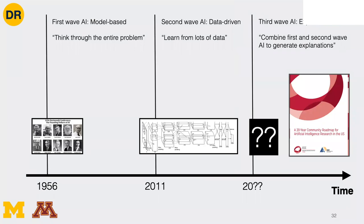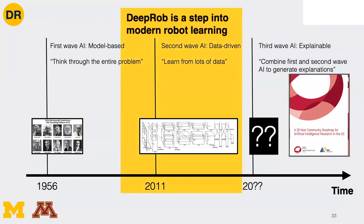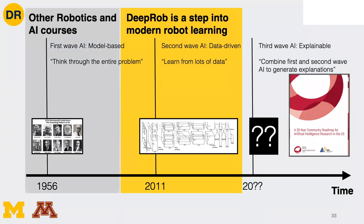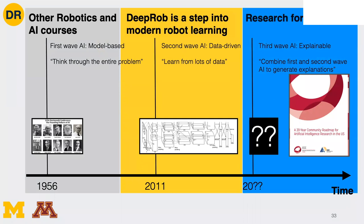In this course we'll focus on using deep learning specifically for robot perception using CNNs and learning techniques that take image or visual input. If you're interested in the first wave, there are introduction to AI and advanced AI courses covering model-based techniques. Currently the research frontier is moving toward explainable AI.